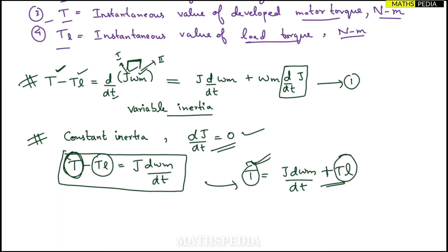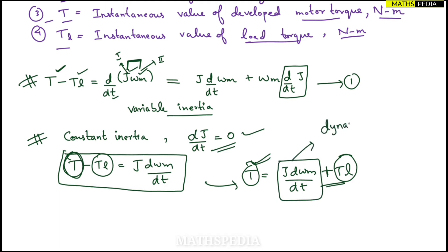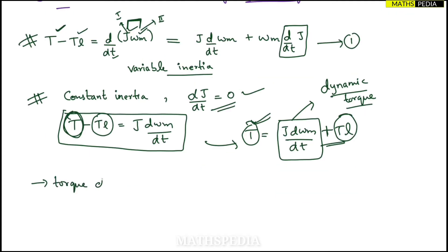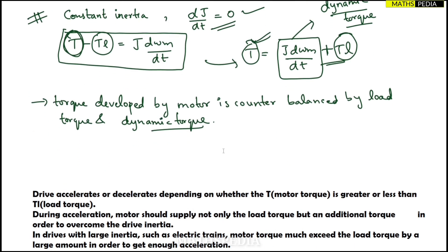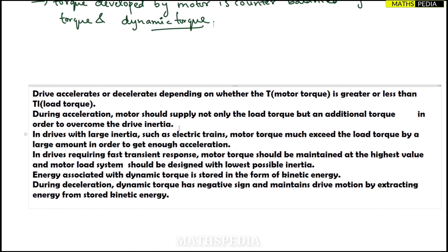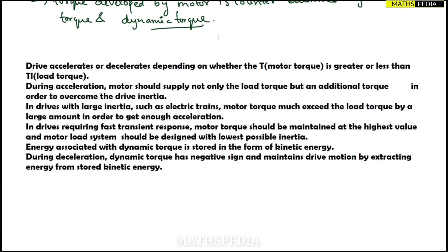The term J·(dωM/dt) is called the dynamic torque. This is an important term to remember. The torque developed by the motor is counterbalanced by both the load torque and this dynamic torque. This completes the fundamental torque equation of the motor-load system.